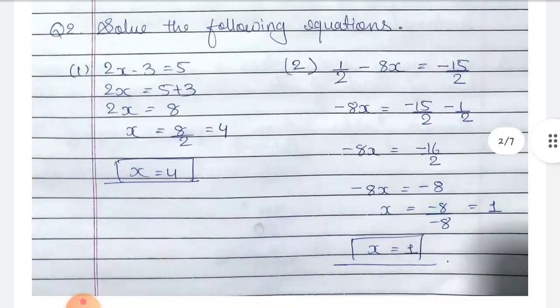Question number two: solve the following equations. Number one is 2x minus 3 is equal to 5.